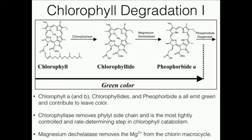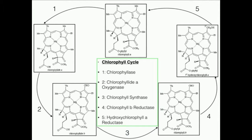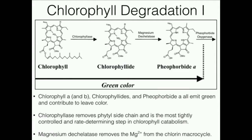We actually saw chlorophyllase in the chlorophyll cycle — that was enzyme one. It turns out that chlorophyllase is going to catalyze the initial step in the degradation of chlorophyll. When we hydrolyze off that phytial side chain we get the chlorophyllide. If this was chlorophyll A, which it mostly is, then this will be chlorophyllide A.